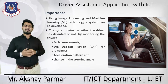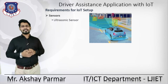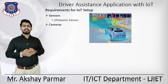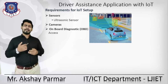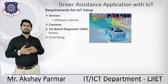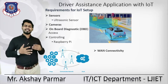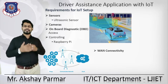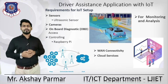Let's see some of the hardware and sensor requirements for building this IoT setup. First, we can use ultrasonic sensors. After that, cameras and an onboard diagnostics (OBD) unit. For controlling, we can use a Raspberry Pi microcontroller for transferring and processing data and taking real-time action. We need really good connectivity — for that we can have WAN connectivity. After that, we can use cloud services for maintaining and processing data.